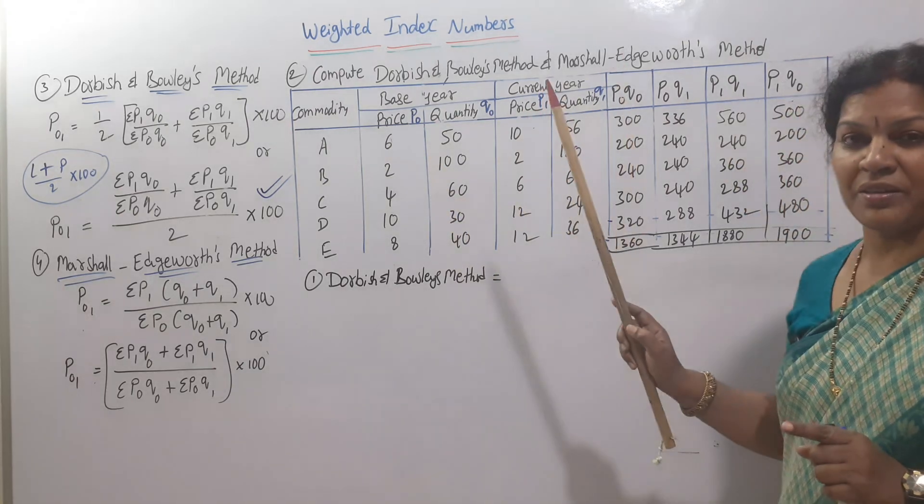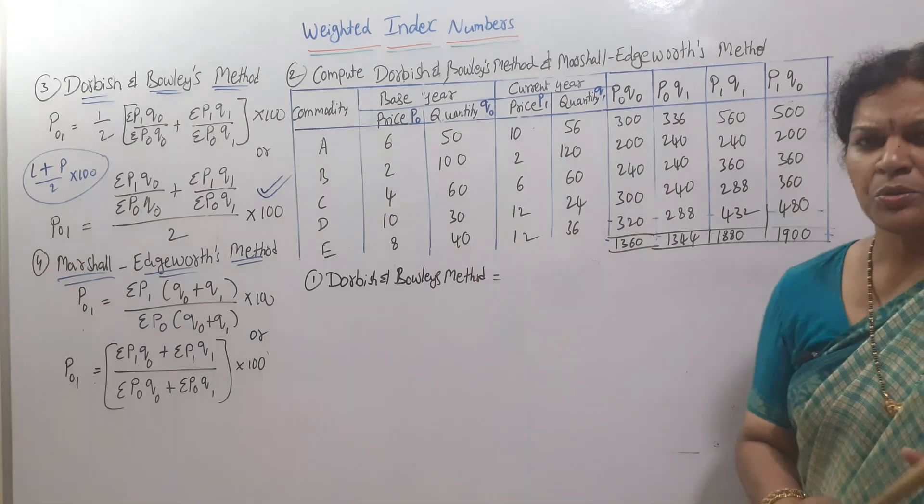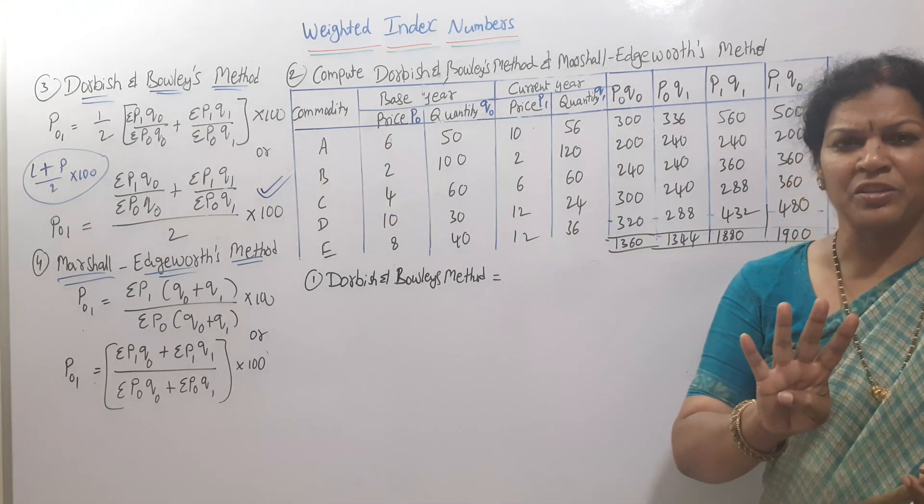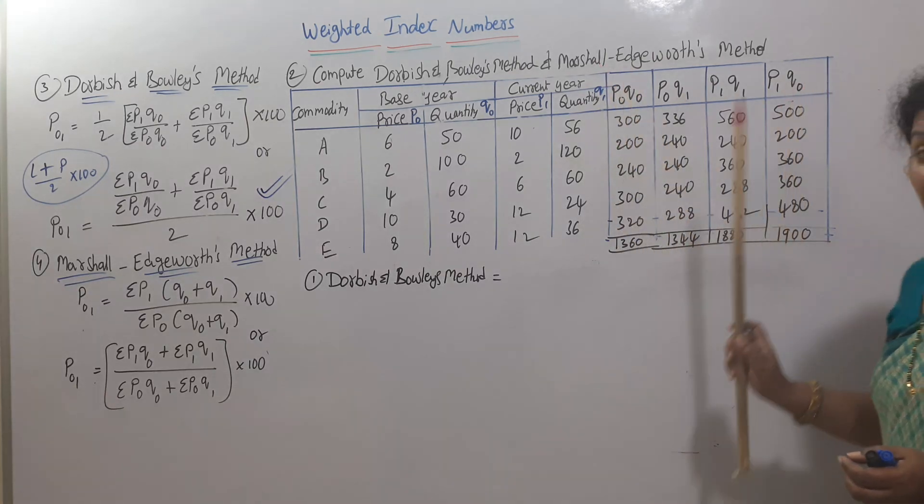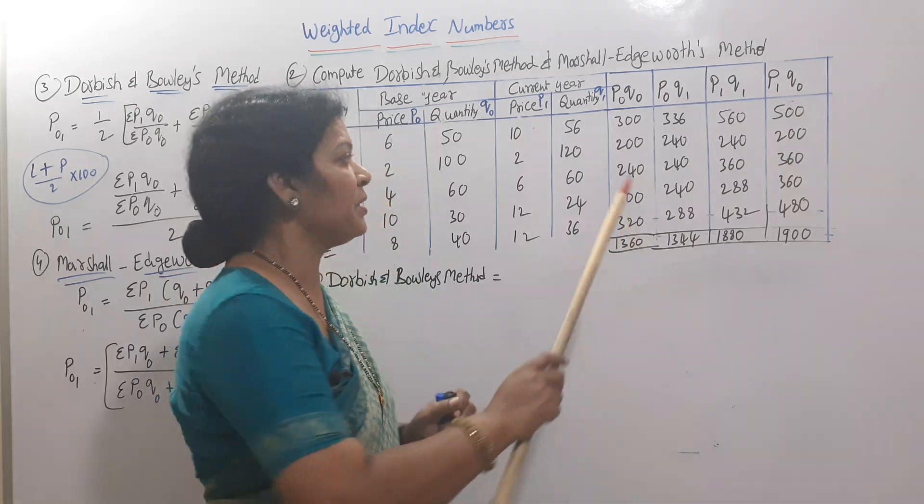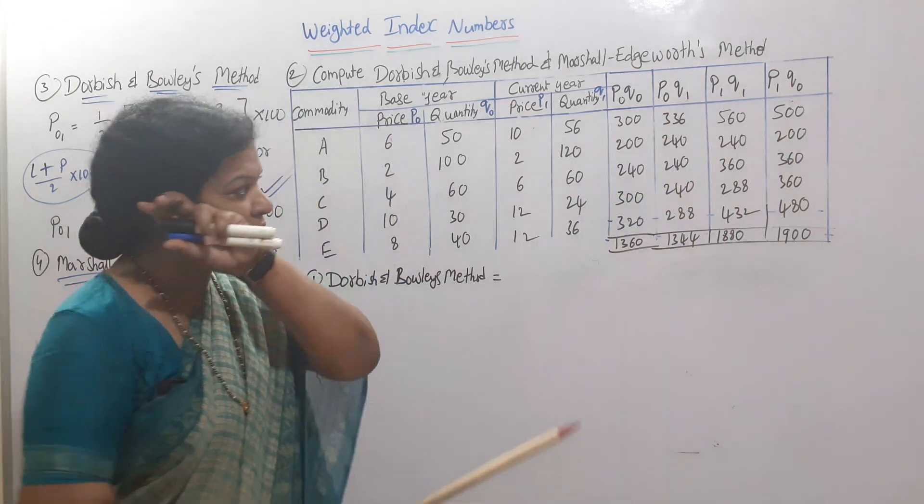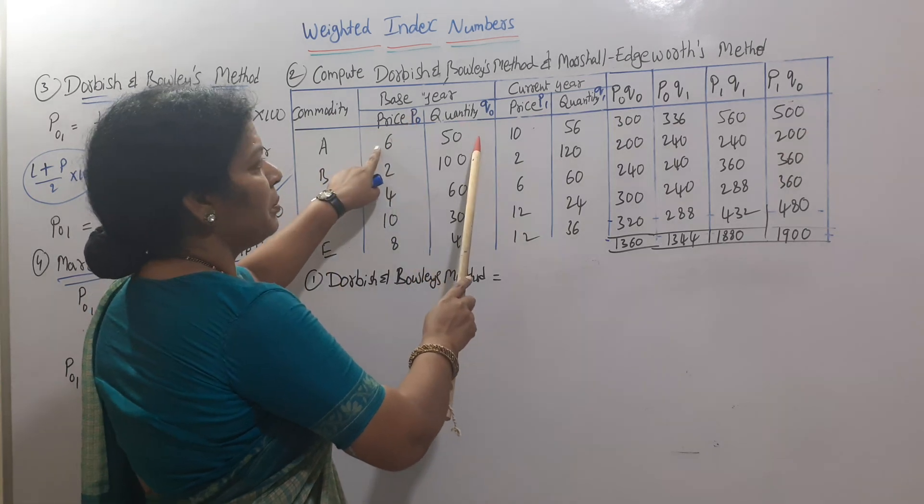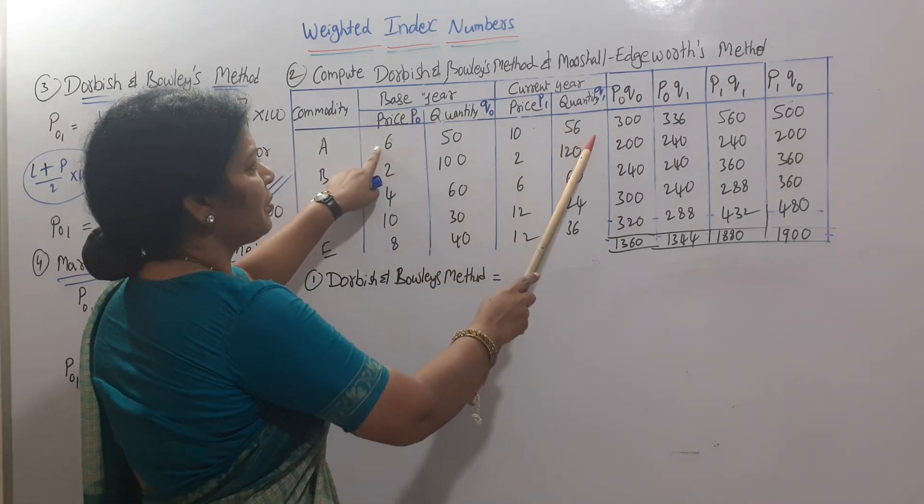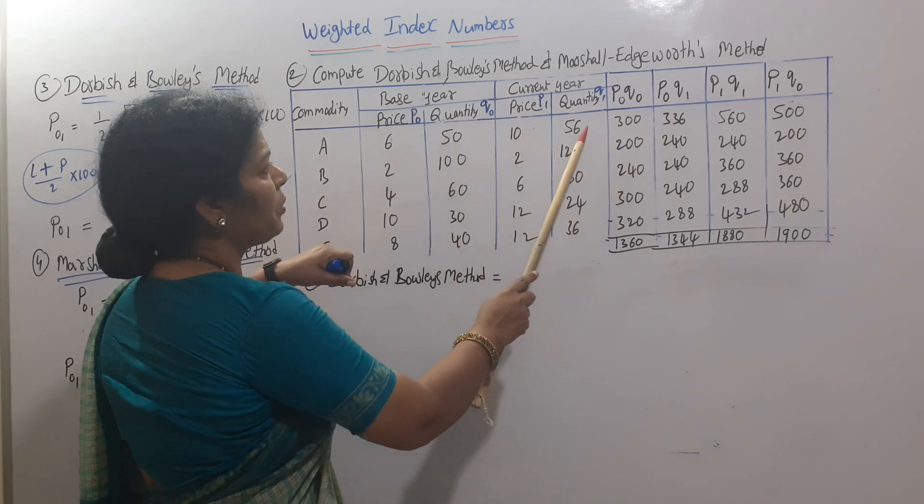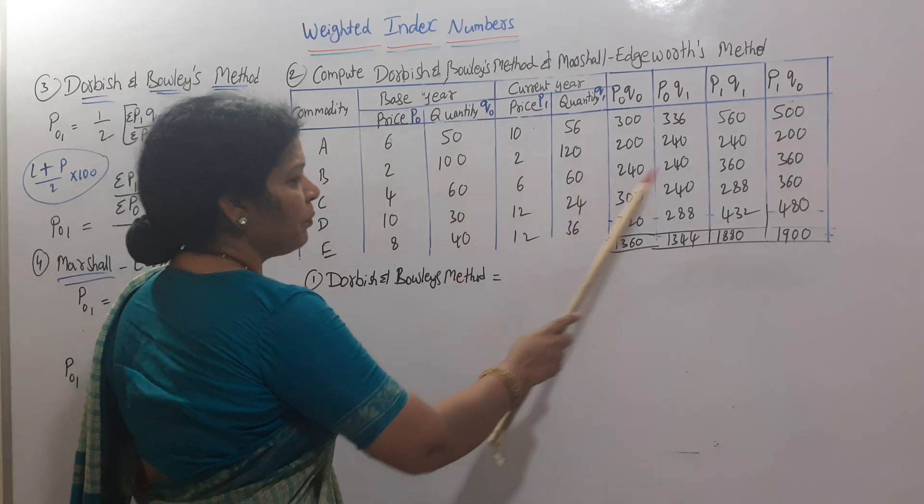As you know, we need four multiplications as per Laspeyres and Paasche. I've taken four combinations: P1Q0, P0Q1, P1Q1, and P0Q0 - four combinations multiplied.